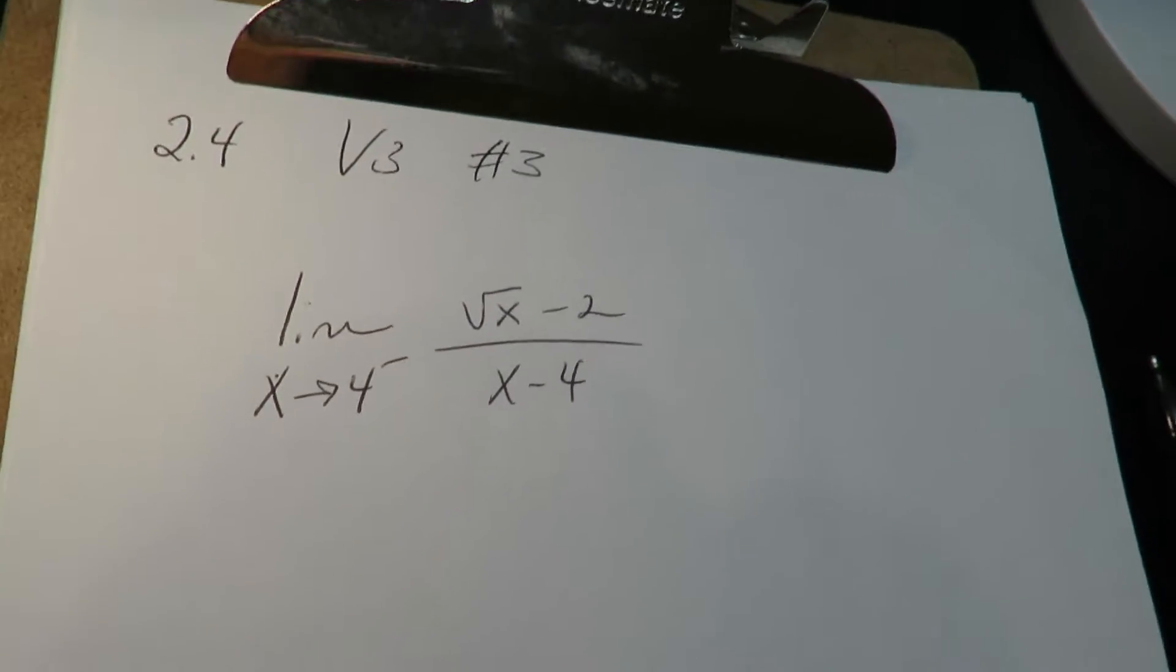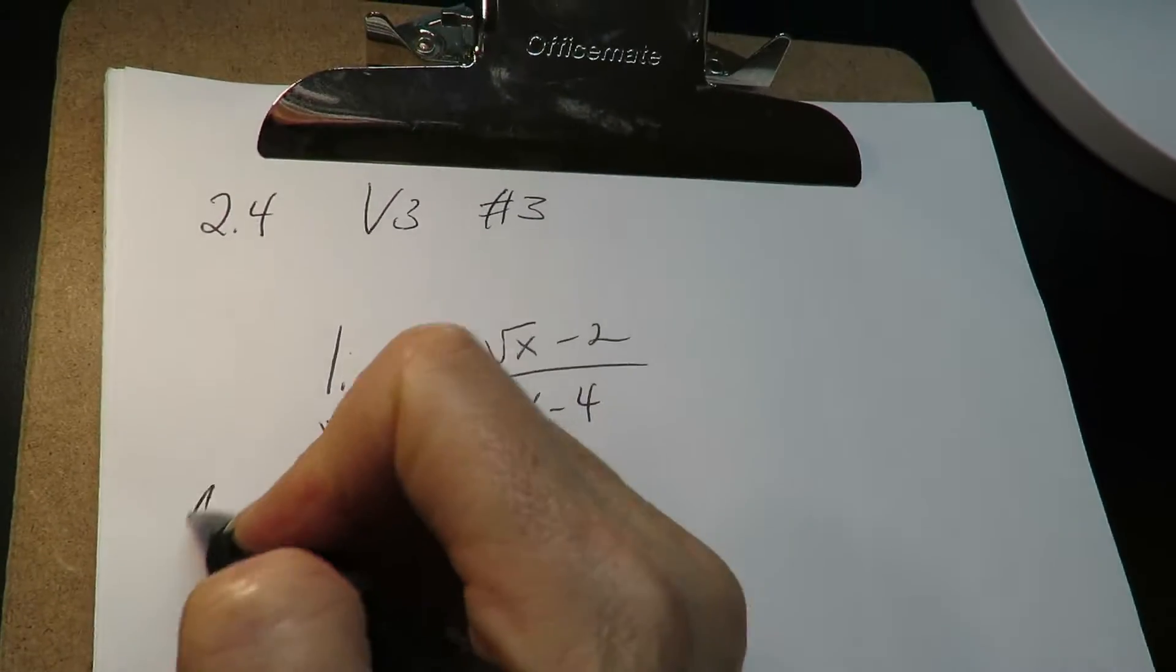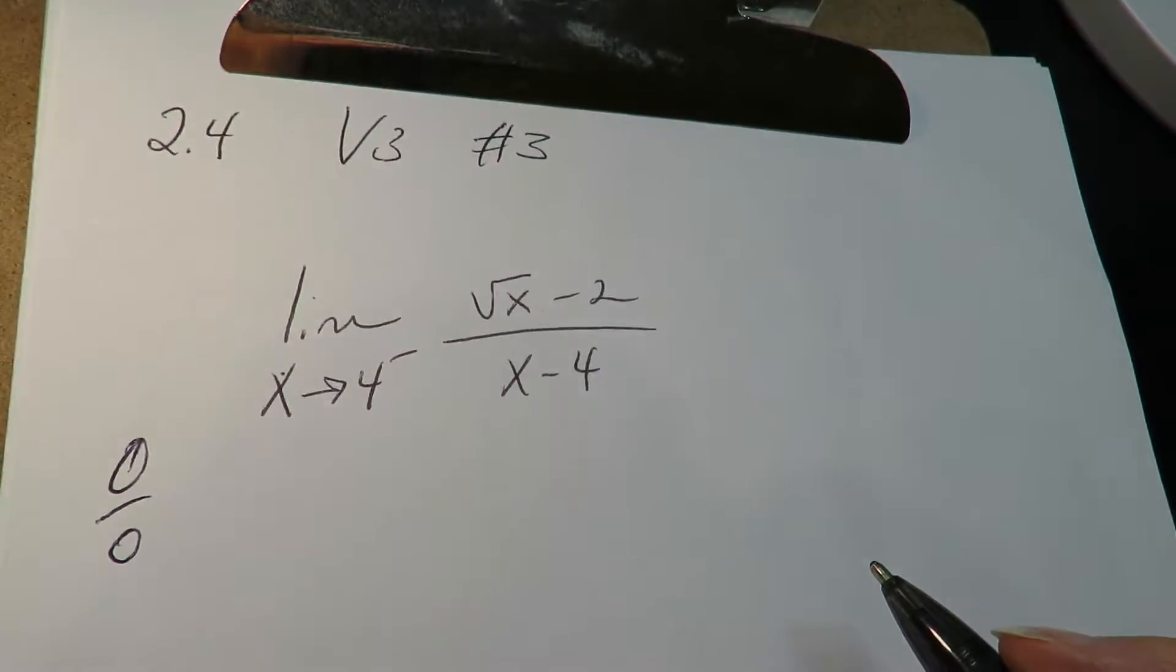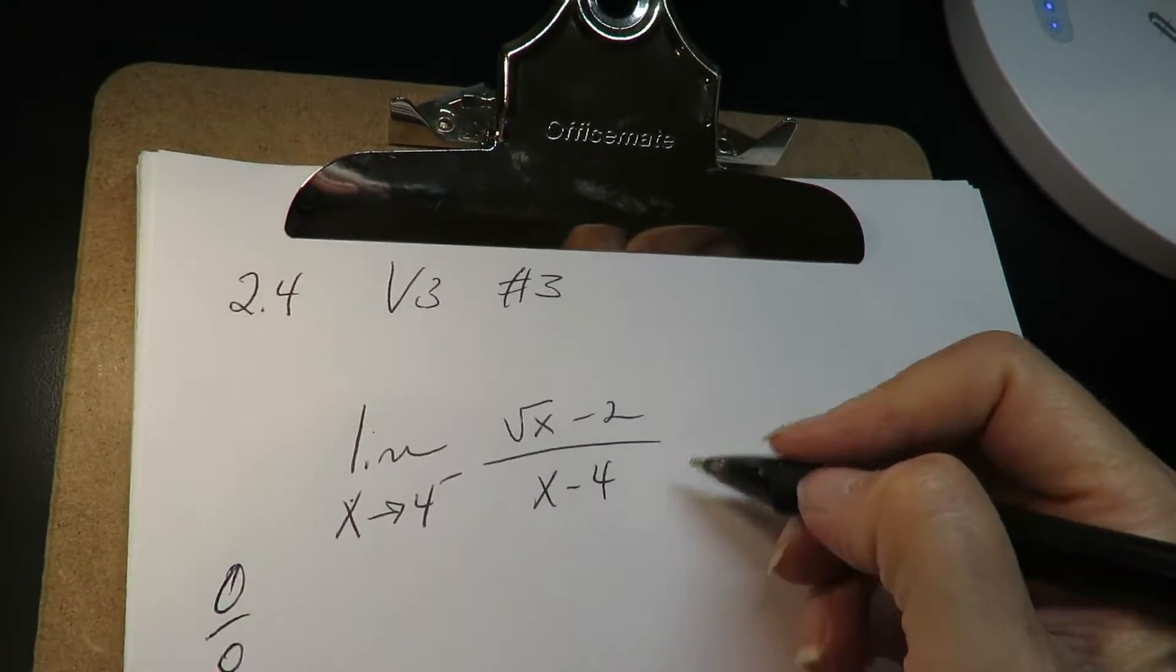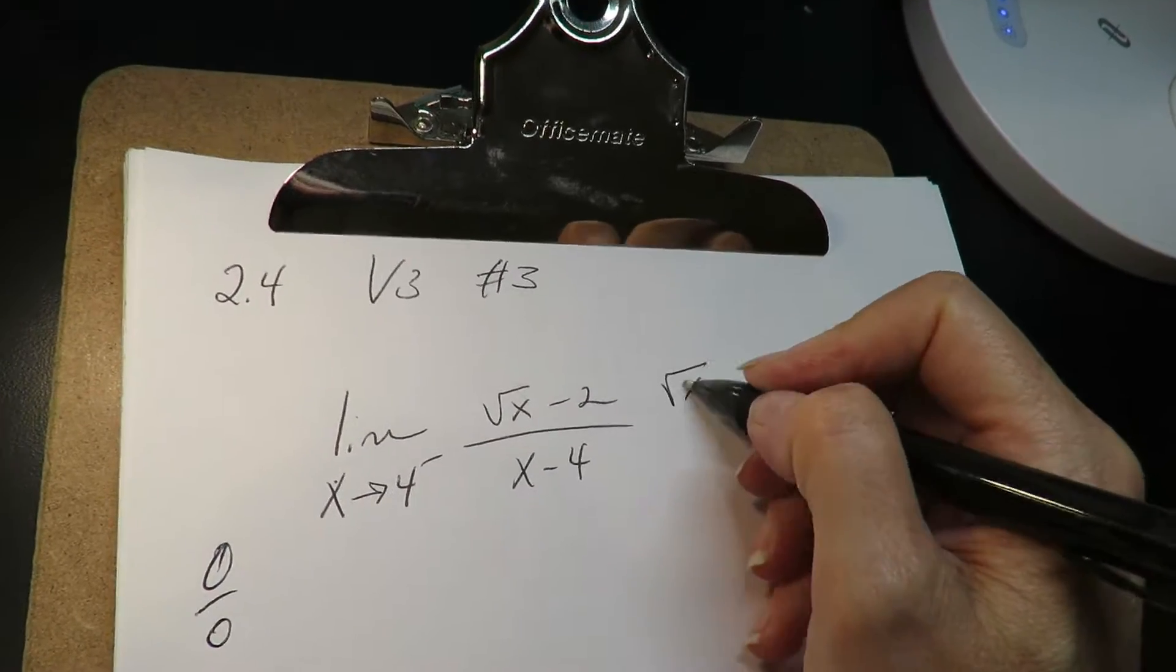So for this one, if you plug in 4, you'll notice you get 0 over 0, which is the indeterminate form. So you want to multiply up-down by the conjugate.